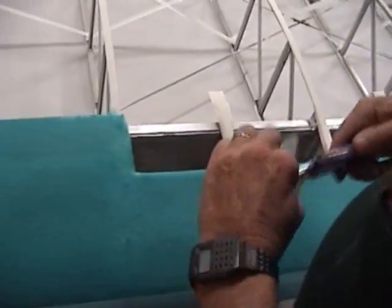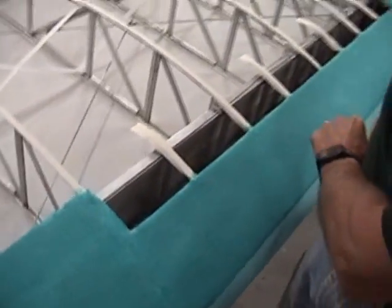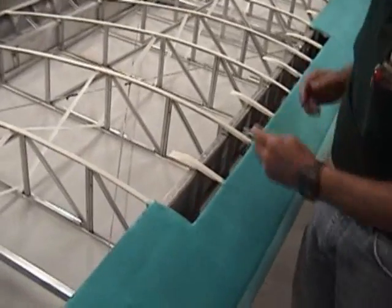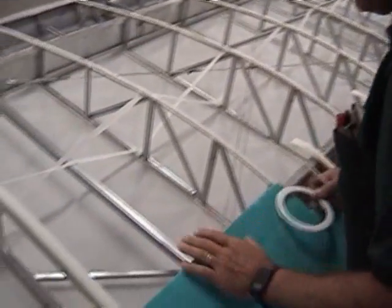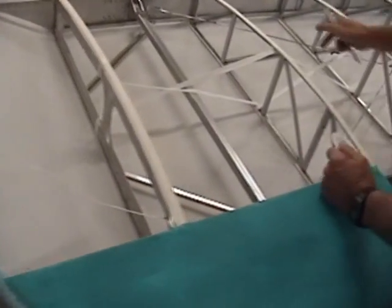Now for inspection rings, they're your access to the internal part of the wing once it's covered. Areas that you want to be able to inspect are junctions such as your drag and anti-drag wires here.